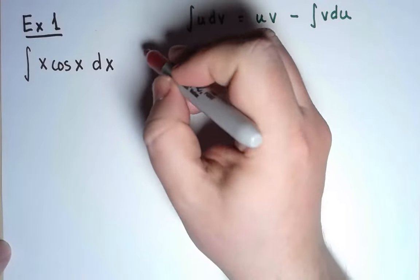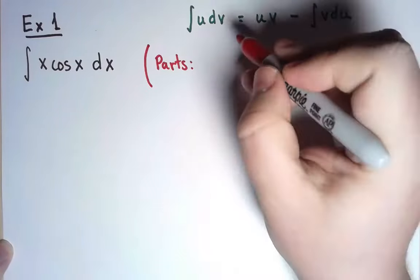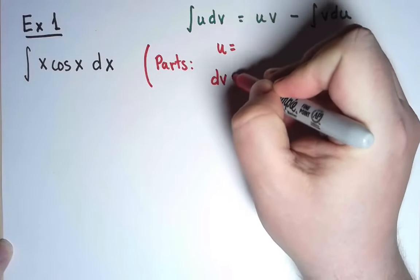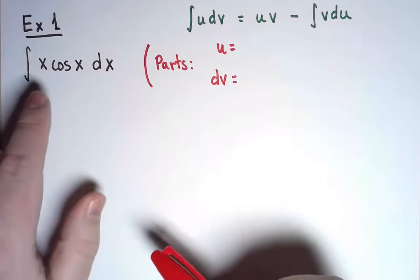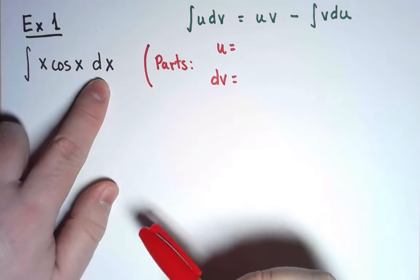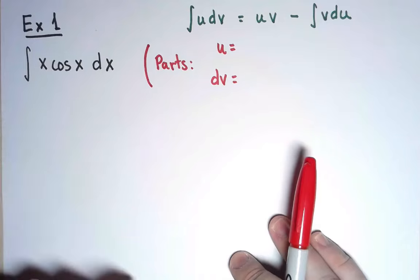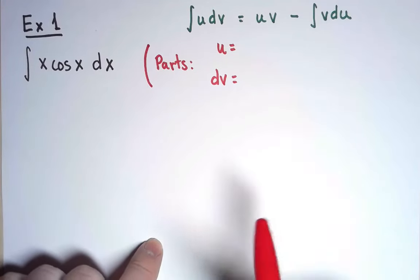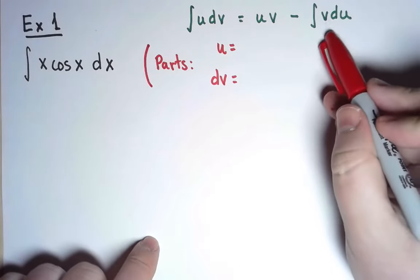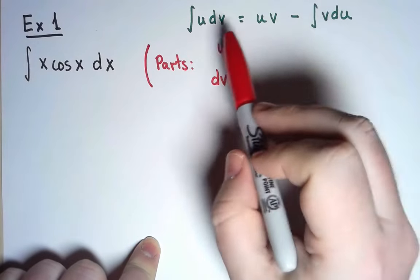When I use integration by parts, I have a choice to make. What do I take as u, and what do I take as dv? x cos x dx must be u dv, but that can be arranged in a couple of ways. Let's keep an eye on our goal. I want the transformed integral to be easier than the original integral.